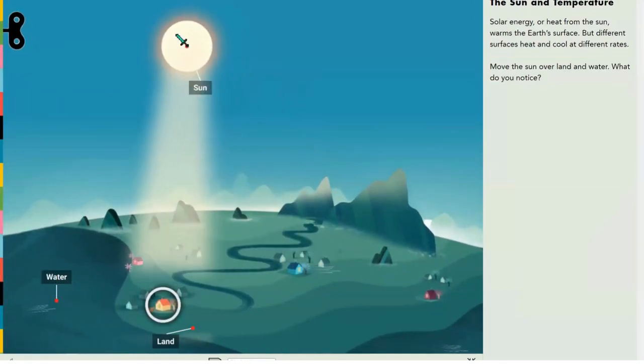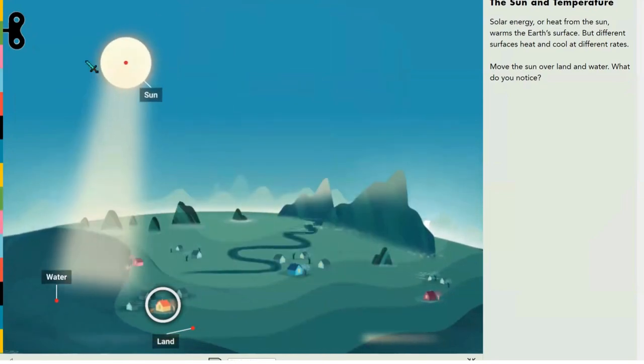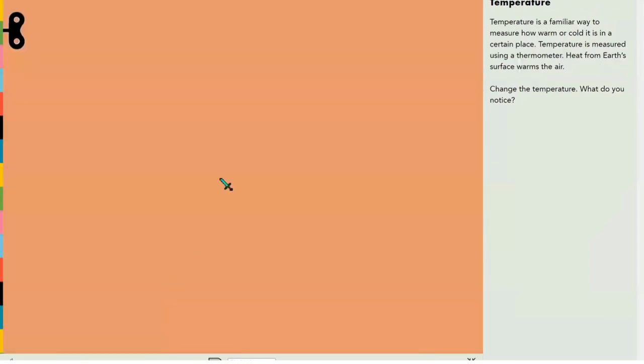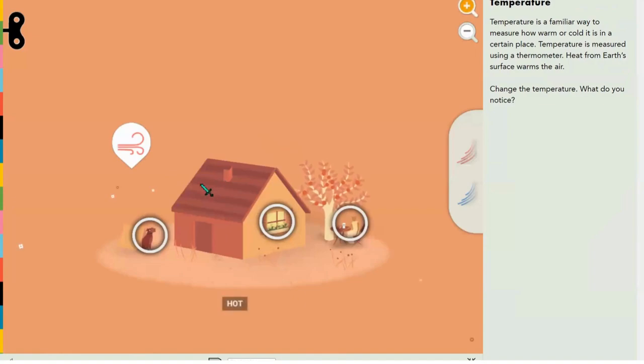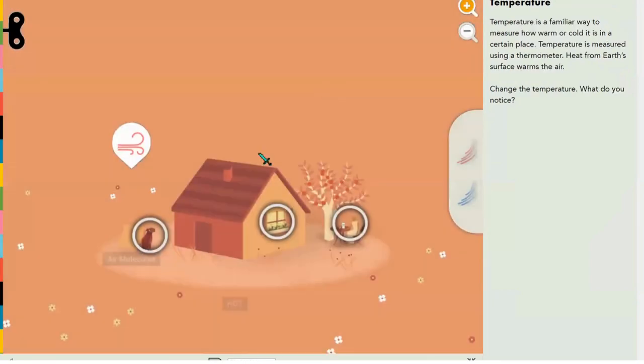Now how does the sun really affect temperature anyways? Let's check this out. So we've got a house and it's really hot outside now. In hot air, air molecules don't really stop moving and they're super violent, crashing into each other every single time they get a chance to.